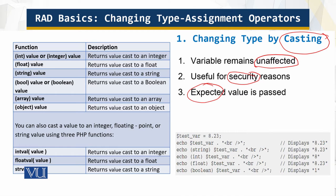How do we go about it? We write the type before the actual value — that is type casting. You can type cast to make it boolean, object, array, and so on.